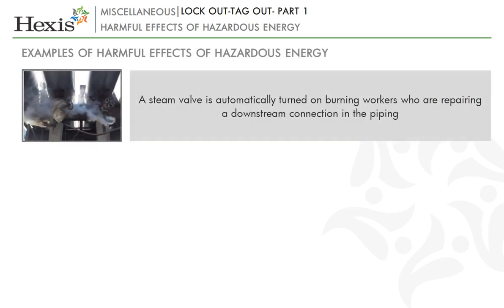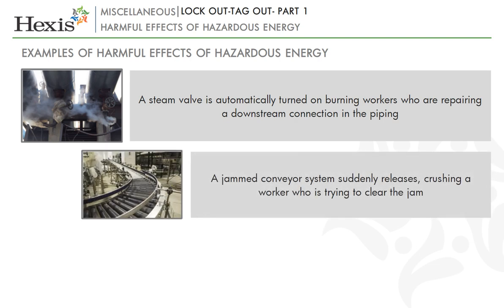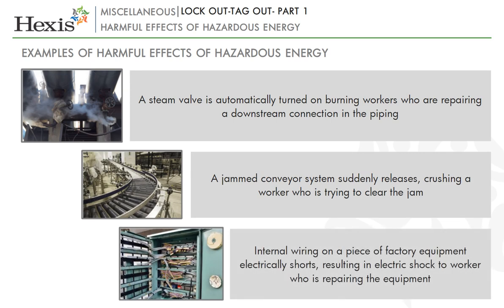Examples of harmful effects of hazardous energy are: a steam valve is automatically turned on, burning workers who are repairing a downstream connection in the piping. A jammed conveyor system suddenly releases, crushing a worker who is trying to clear the jam. Internal wiring on a piece of factory equipment electrically shorts, resulting in electrical shock to a worker who is repairing the equipment.